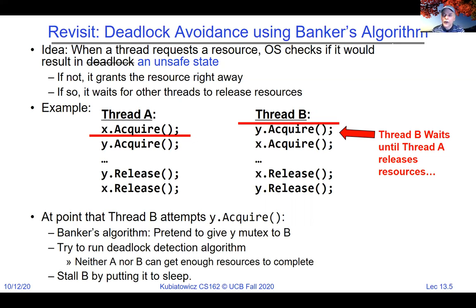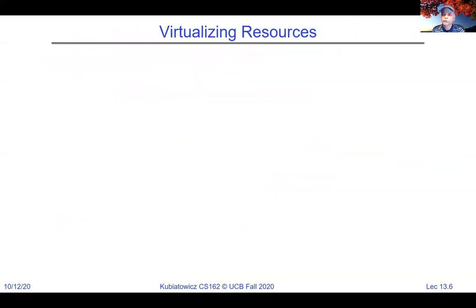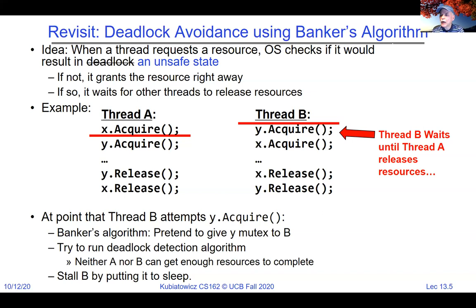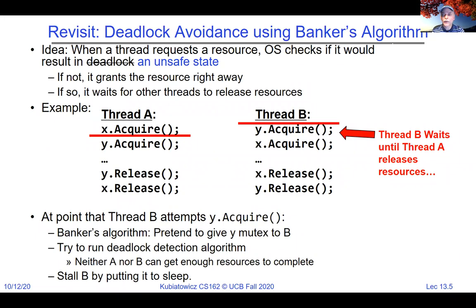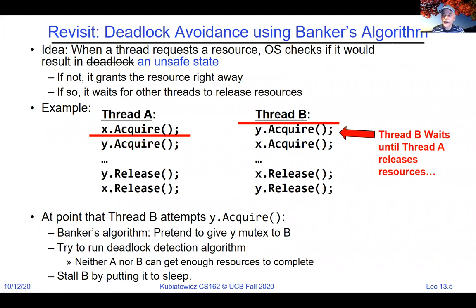That's a simple example of how the banker's algorithm prevents a deadlock. We also talked about algorithmic responses to things like the dining lawyers problem — each grabbing two chopsticks — and how to prevent that by analyzing it with the banker's algorithm. You don't necessarily have to run it dynamically; you can use it to analyze an algorithm offline. I recommend reviewing last lecture. How would we prevent A and B from ever deadlocking without the banker's algorithm?